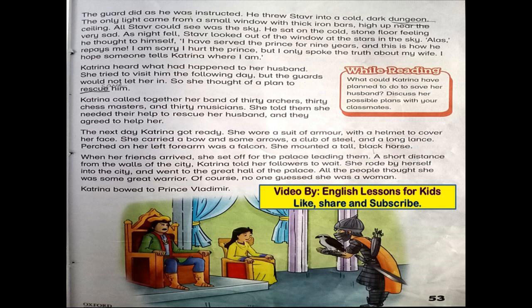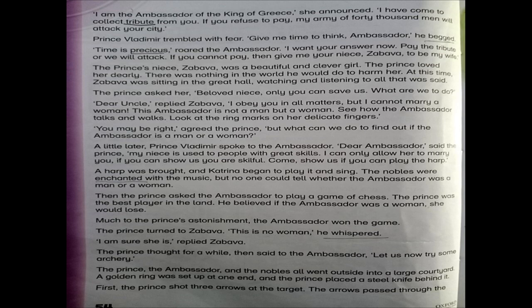She mounted a tall black horse. When her friends arrived, she set off for the palace leading them. A short distance from the walls of the city, Katrina told her followers to wait. She rode by herself into the city and went to the great hall of the palace. All the people thought she was some great warrior. Of course, no one guessed she was a woman. Katrina bowed to Prince Vladimir: 'I am the ambassador of the king of Greece,' she announced.